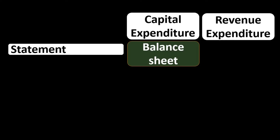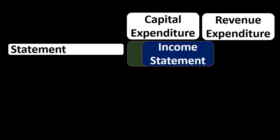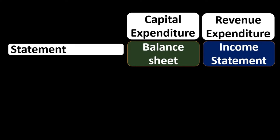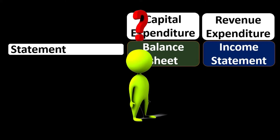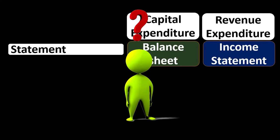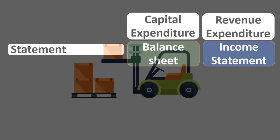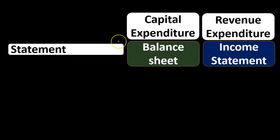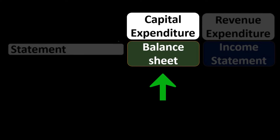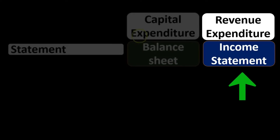If it is a capital expenditure, it's going to go on the balance sheet. If it's a revenue expenditure, it's going to go on the income statement. Thinking about our forklift, the question is: if we do some maintenance to the forklift, is it a capital expenditure we should put on the balance sheet and then expense over time, or is it something we should expense in year one?